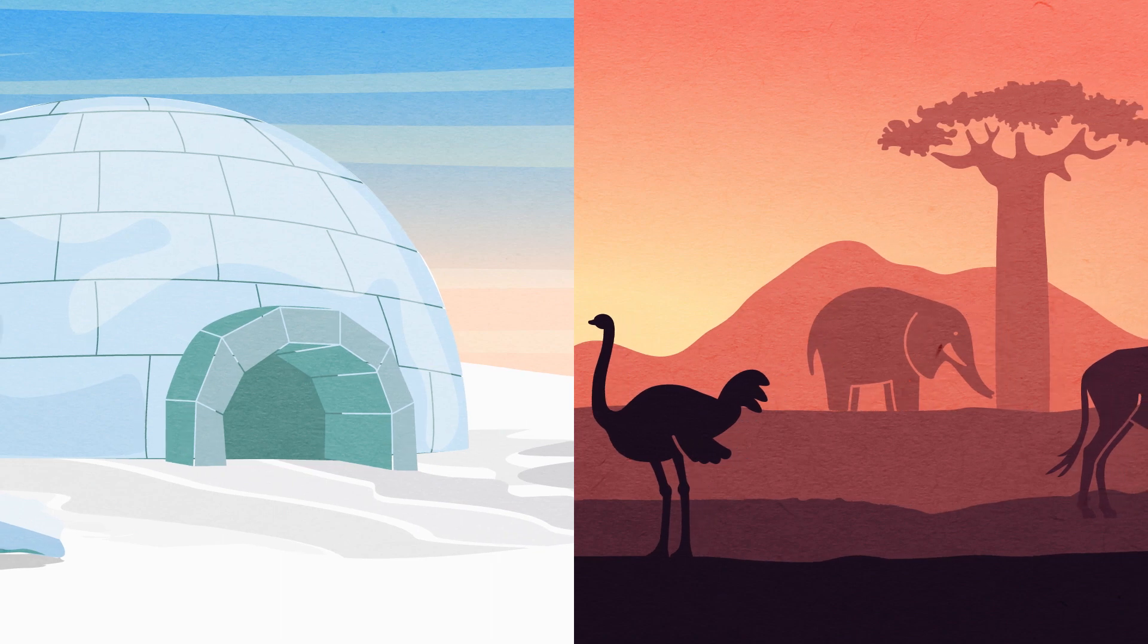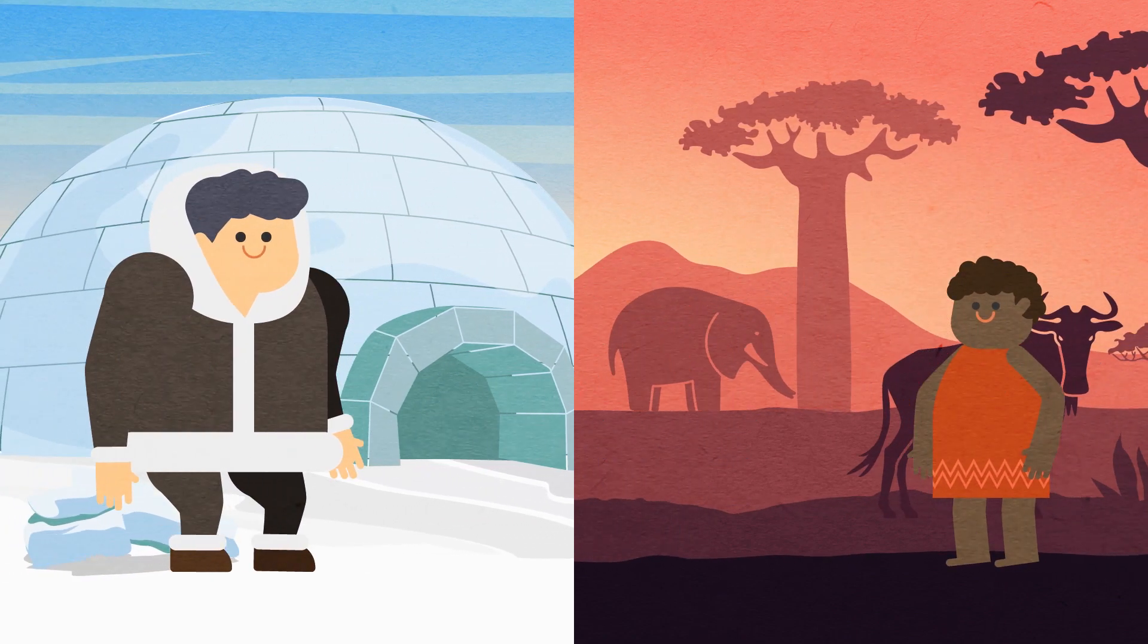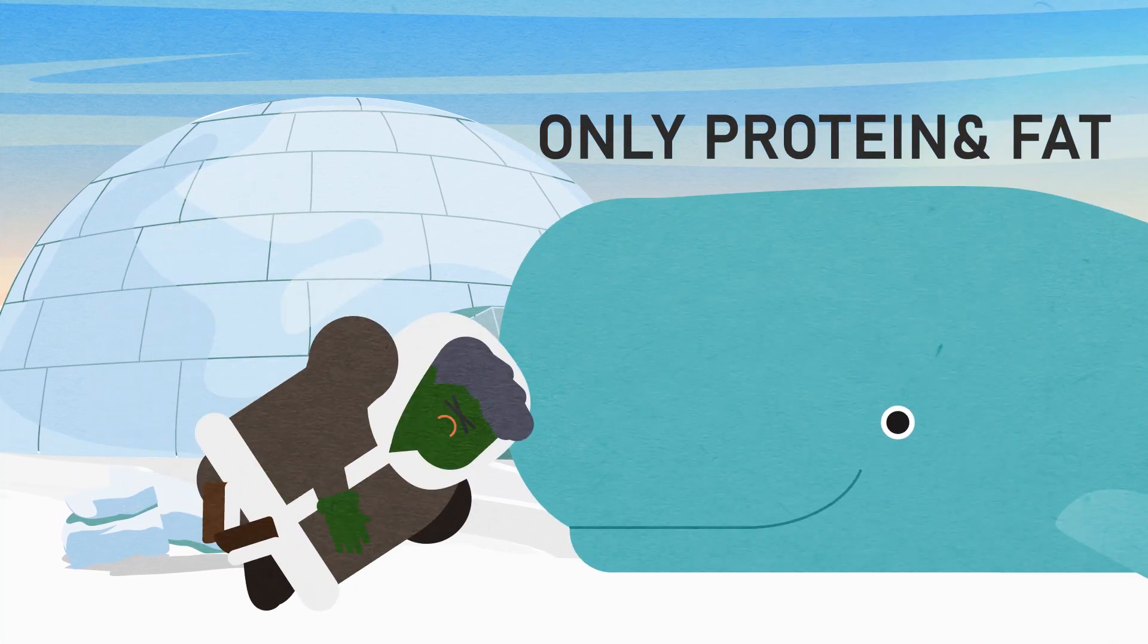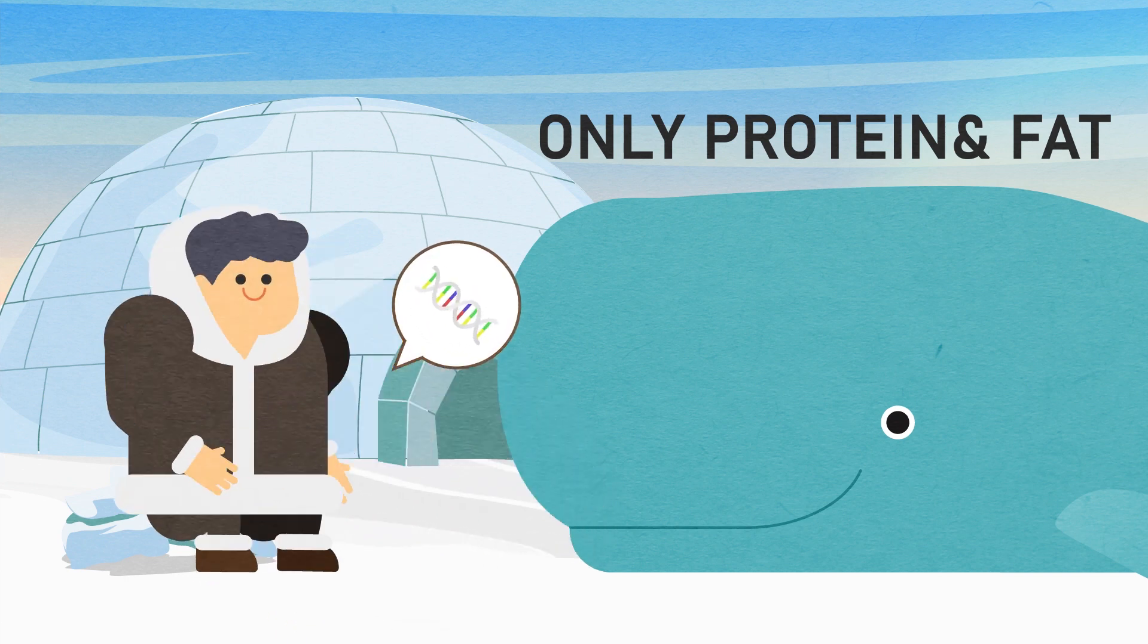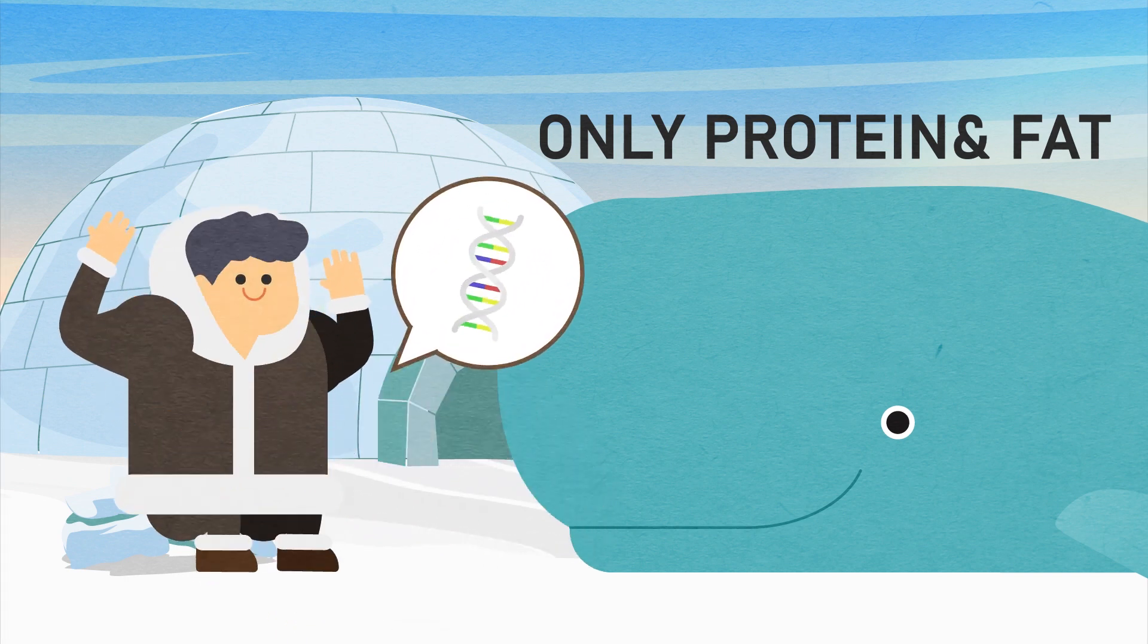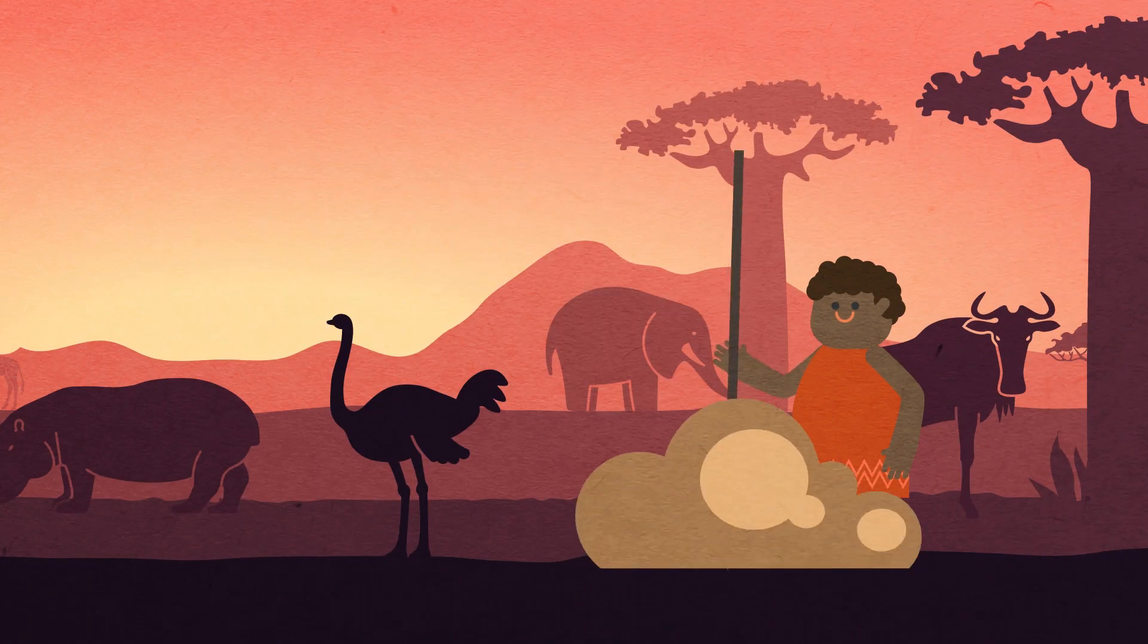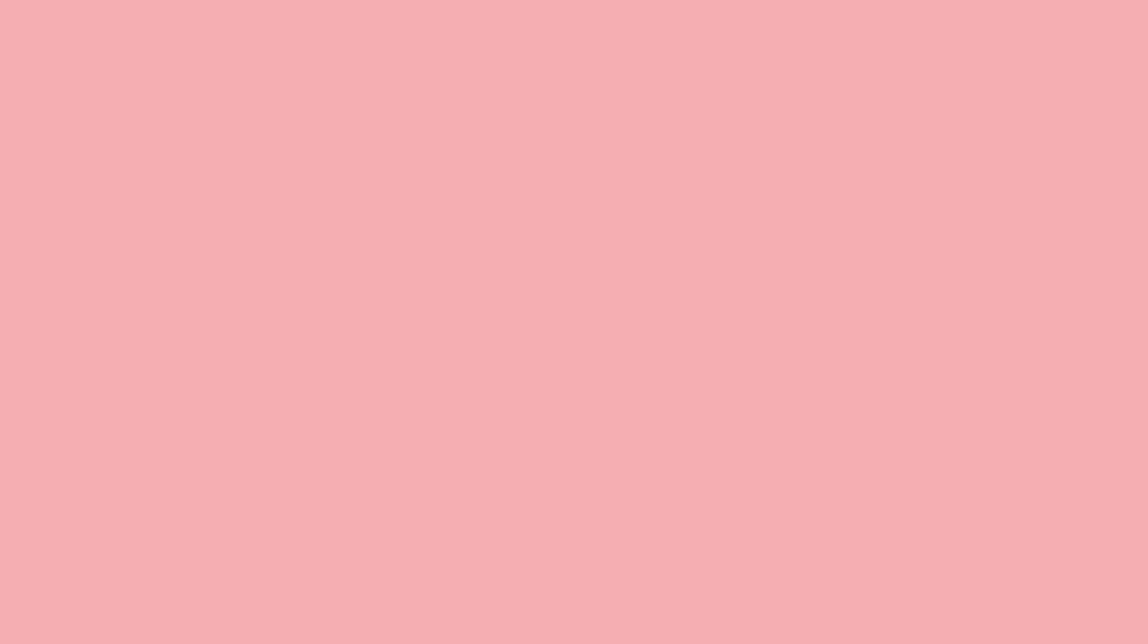In the same way, modern humans show signs of evolutionary adaptation depending on environment. Inuits can live without succumbing to diseases while primarily eating food that has protein and fat, like seal and whale meat, because they have genes that control their metabolism of fat. Likewise, hunter-gatherers in Africa are short because it is advantageous to their survival in tropical rainforests.